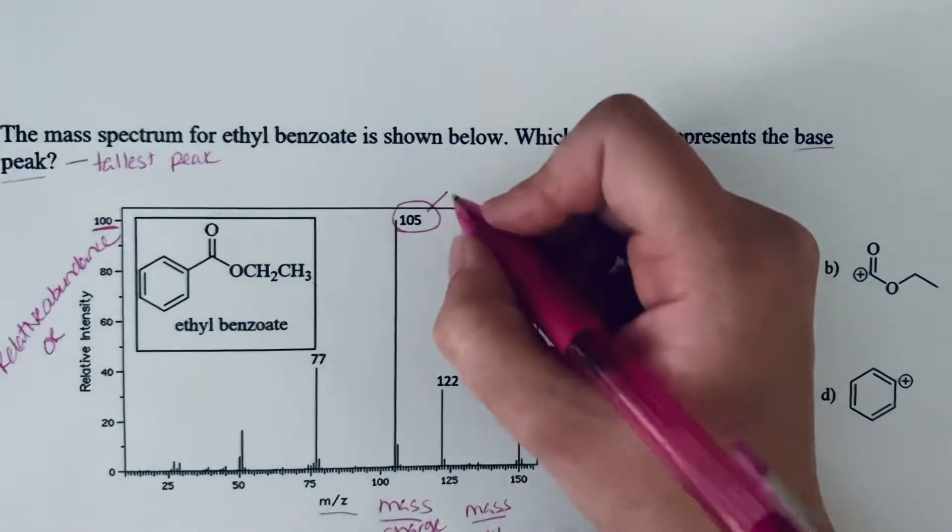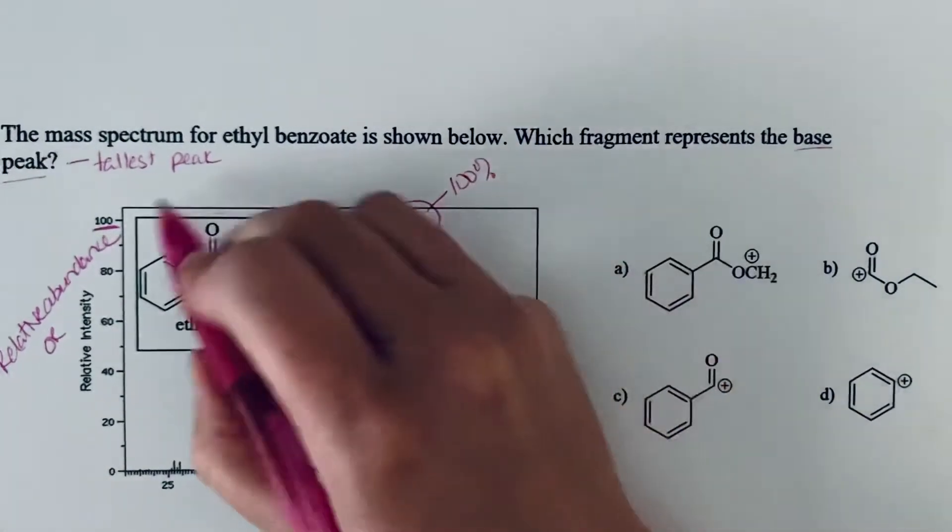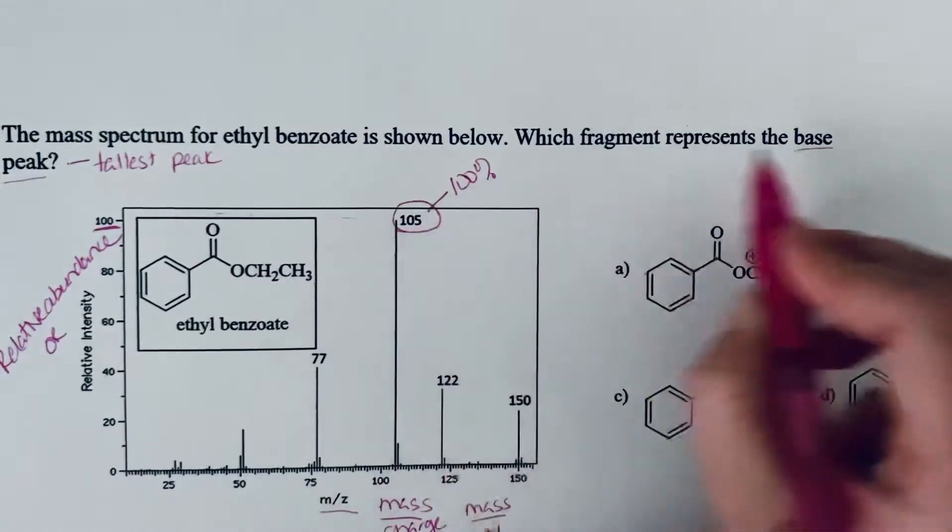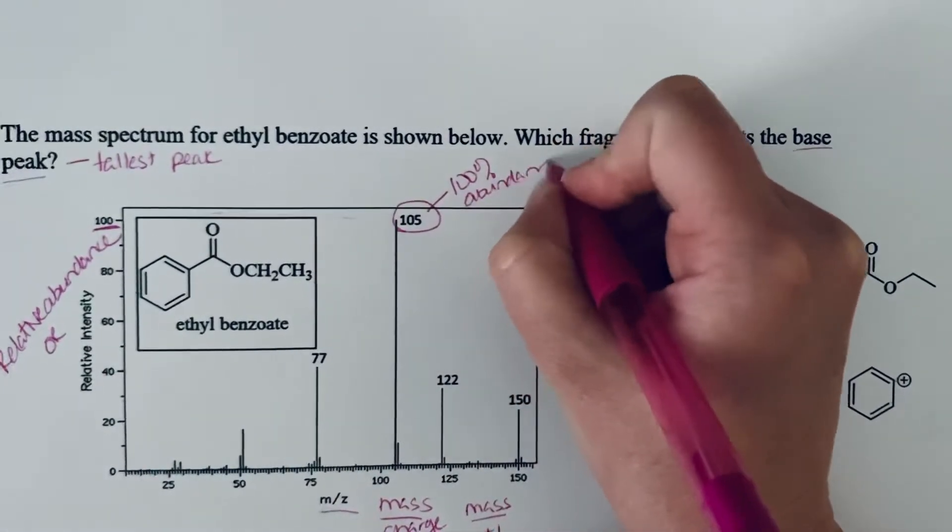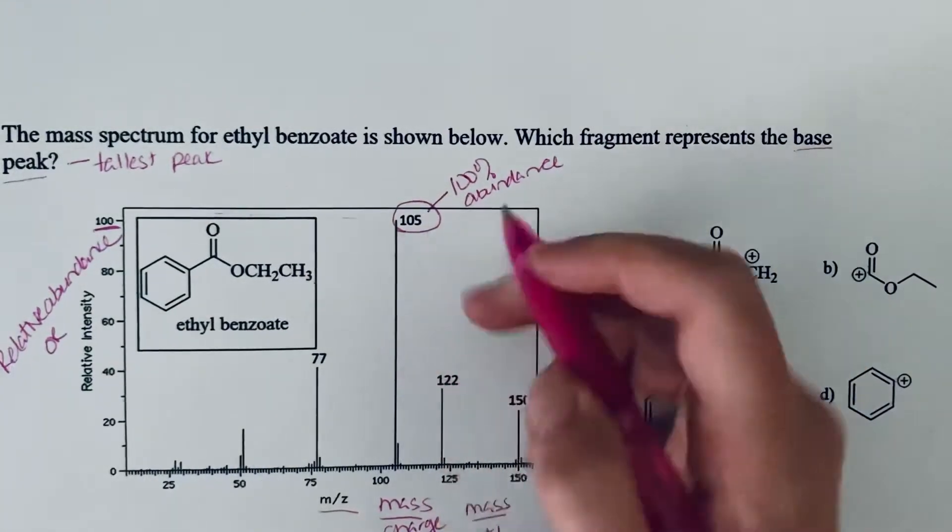What you're really looking at, that 105, is the weight of that fragment. It is a fragment that is at 100% abundance. That's how we know which one to pick out when we see the term base peak. So it's at 100% abundance and in this particular case, it has a mass of 105.